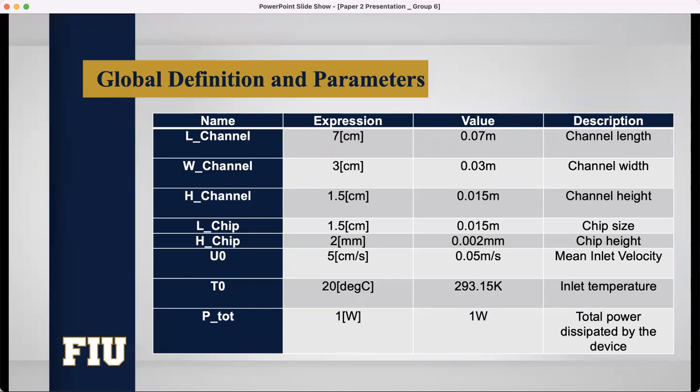After going to the geometry phase, I need to define the parameters that will be used in my model. For channel length, we have used 7 cm. 3 cm was our channel width. Our channel height was 1.5 cm. The tip size was 1.5 cm. Mean inlet velocity was 5 cm per second. Inlet temperature was 20 degrees Celsius or 293.15 Kelvin. And the total power displayed by the device was 1 Watt. I know it's very small, but we just tried to design a heat sink.